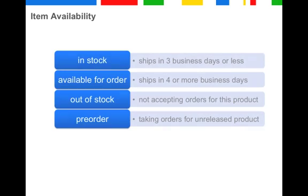Item availability is a really important and critical attribute as it ties into our new policy in regards to the freshness of your data. The availability of your items can change quite frequently and you need to make sure Google is notified of these changes as they happen. We will regularly check these attributes and if the values provided do not match the data you submit in your feed, your account may be suspended.